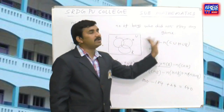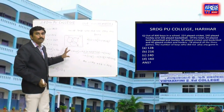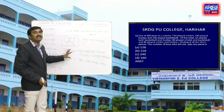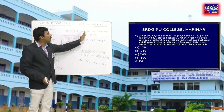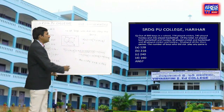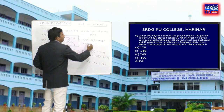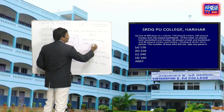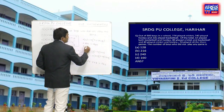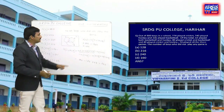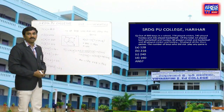640 is the number who played at least one game. The number of boys who did not play any game is n(U) minus n(C∪H∪B) = 800 minus 640 = 160. So the answer is 160.